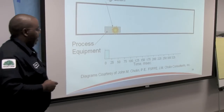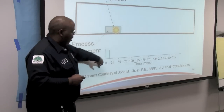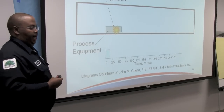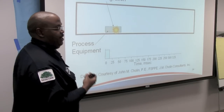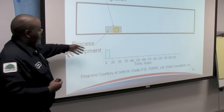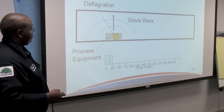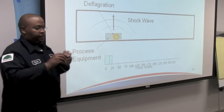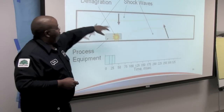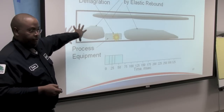When we talk about dust explosions and deflagrations, we're talking milliseconds — this stuff happens quickly. You don't have a chance to realize you're in the immediate zone. With this model: a piece of process equipment has an initial internal deflagration, it creates a shock wave with pressure moving out, and elastic rebound shock waves stir up residual dust. This is why housekeeping is so critical.